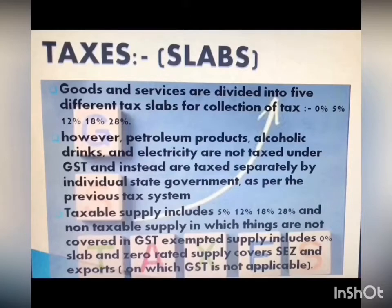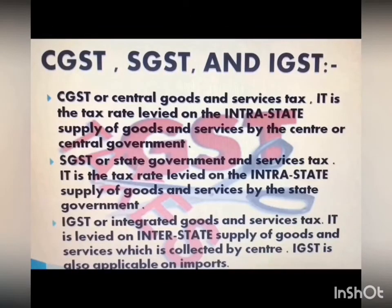An exempt supply includes the 0% slab, and zero-rated supply covers SEZ, that is Special Economic Zones, and exports. GST is not applicable on exports. CGST stands for Central Goods and Services Tax, SGST stands for State Goods and Services Tax, and IGST stands for Integrated Goods and Services Tax. CGST is levied by the Central Government, SGST by the State Government, and IGST by the Central Government. IGST is also applicable on imports.